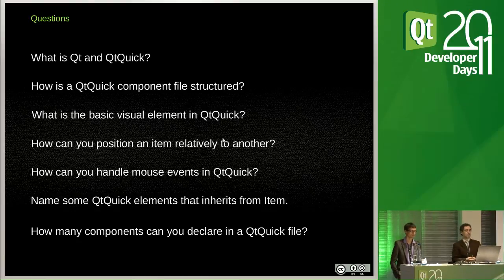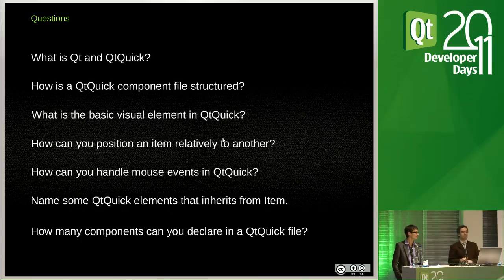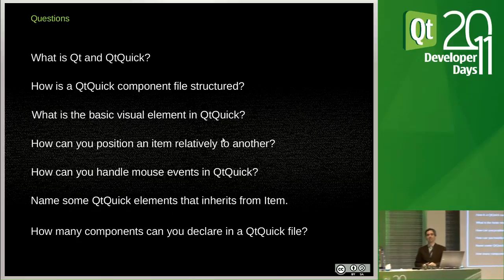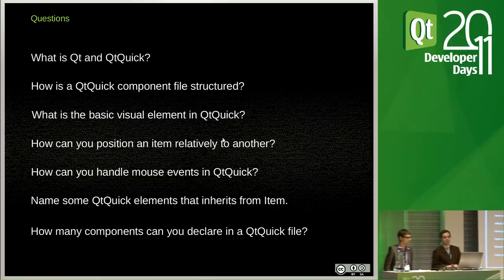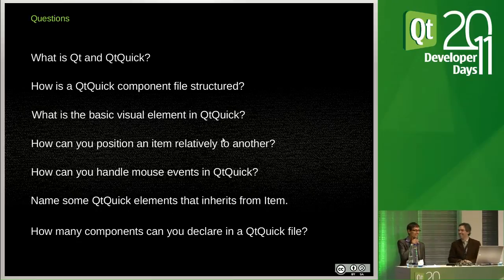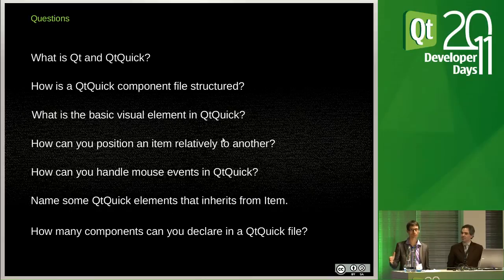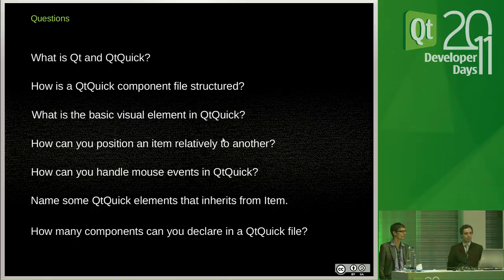By now you should be able to answer all the review questions. Please have a look at them and see if there are any we did not address. One thing Nuno mentioned is that Item is the base element for all visible things on screen — Rectangle, etc. — and there's inheritance behind the scenes. As you're all developers, behind the scenes it's really C++ inheritance.